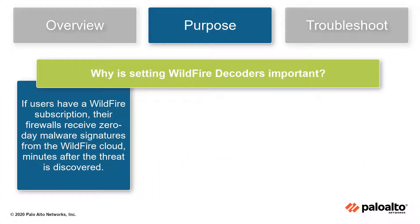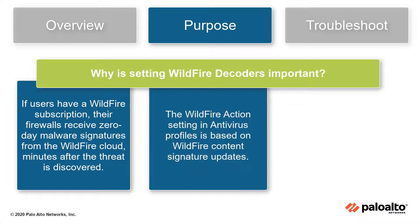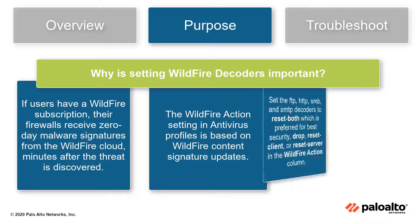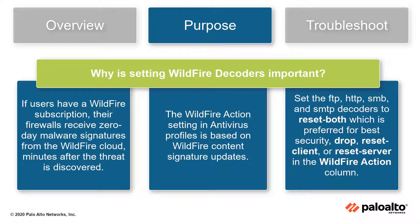If users have a Wildfire subscription, their firewalls receive zero-day malware signatures from the Wildfire cloud minutes after the threat is discovered. The Wildfire Action setting in Antivirus Profiles is based on Wildfire content signature updates. Set the FTP, HTTP, SMB, and SMTP decoders to Reset Both, which is preferred for best security. Drop, Reset Client, and Reset Server are also allowed in the Wildfire Action column.